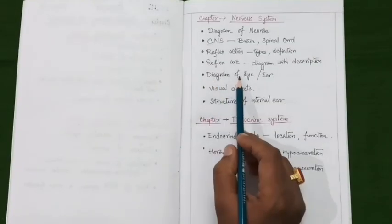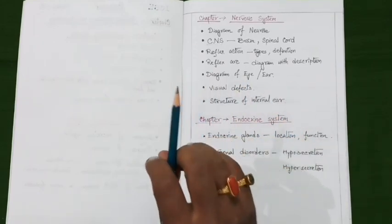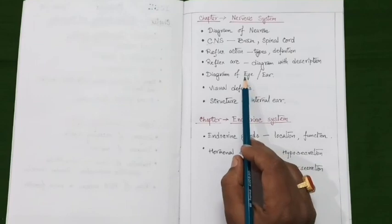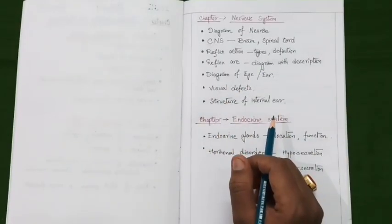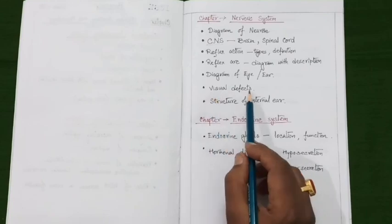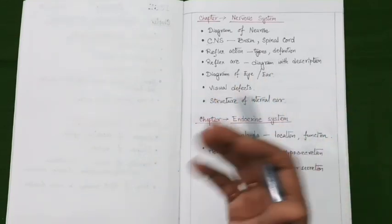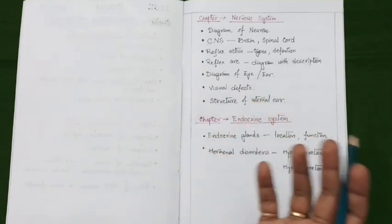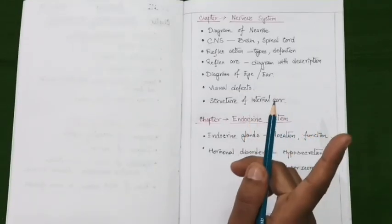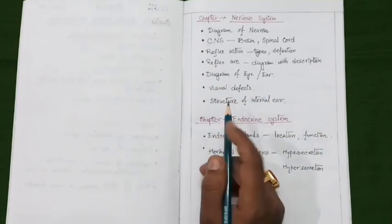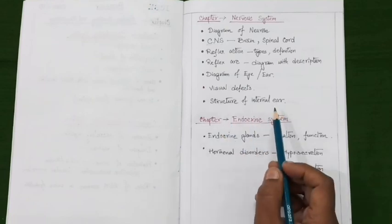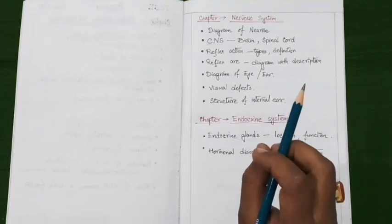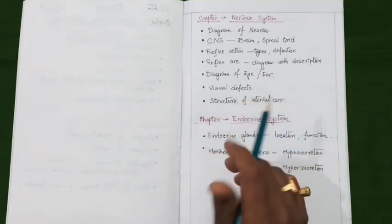Another important topic is the diagram of the eye or ear — you may certainly expect any one question from either the eye or the ear, including diagrammatic questions based on these structures. Next, prepare a detailed study on visual defects like myopia, hypermetropia, cataract, and presbyopia, and know their correction methods as well. The last important topic under this chapter is the structure of the internal ear, especially the location and function of the organ of Corti.